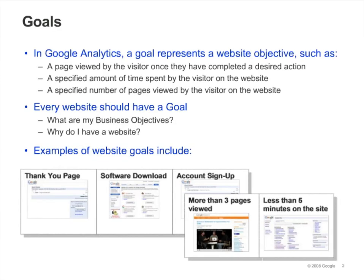Defining site goals and tracking goal conversions is one of the best ways to assess how well your site meets its business objectives. You should always try to define at least one goal for a website. In Google Analytics, a goal represents an activity, or a level of interaction with your website that's important to the success of your business.